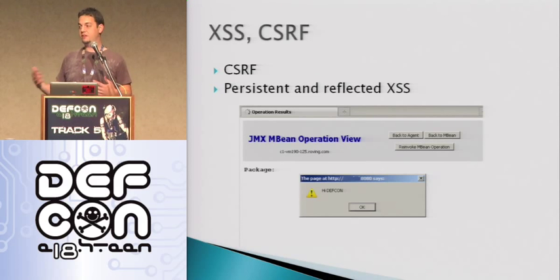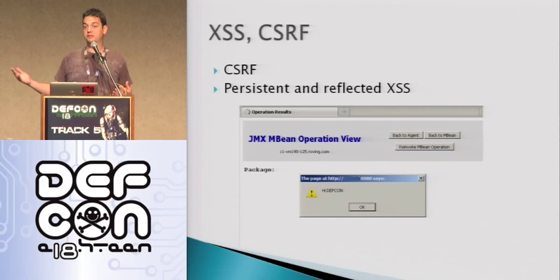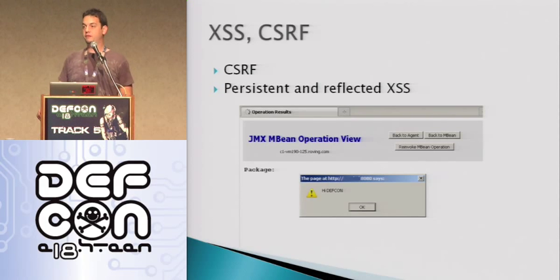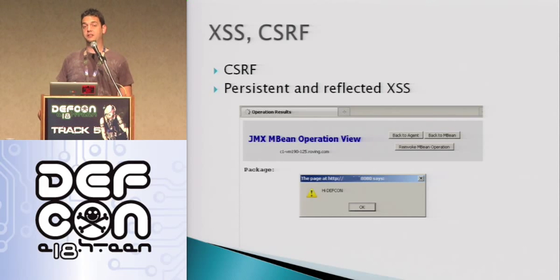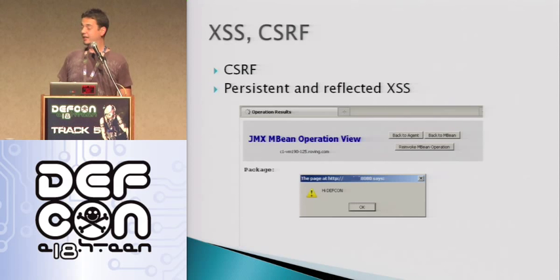One really interesting use case for cross-site request forgery here is that you'll find cases where people look at their JBoss server and say it's really complicated to protect, so instead they'll use Apache or a firewall and just not allow access from outside their network to the JMX console. So if you go to somebody's JMX console and you see a 403 Forbidden, that's a good time to start trying to use CSRF attacks. There's really no protection against these things.